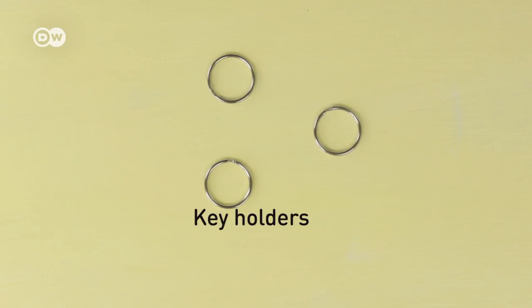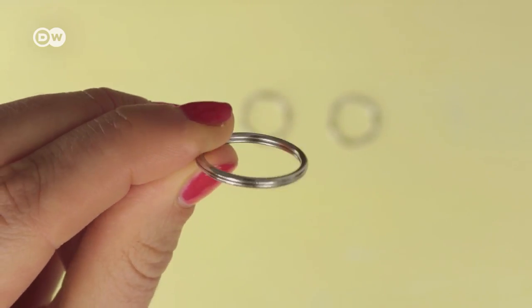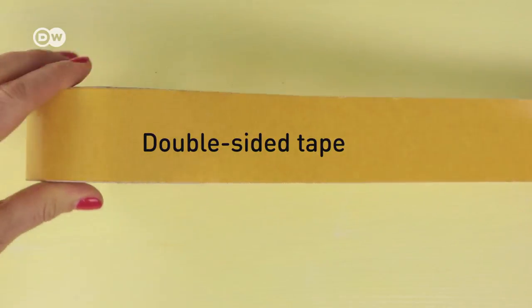Make sure you have enough keyrings for each set of keys you want to hang up later and finally you will need double sided tape to attach the keyboard to the wall.